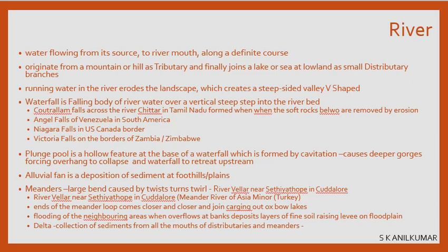Rivers start as tributaries or streams from mountains or hills, and all tributaries join together to form a mighty river. The Ganga has many tributaries bringing water from all directions. The Brahmaputra is also very long and flows through multiple countries, while the Ganges flows only within India. Near the sea or lake, the river ends as small distributaries — the small branches near the river mouth.